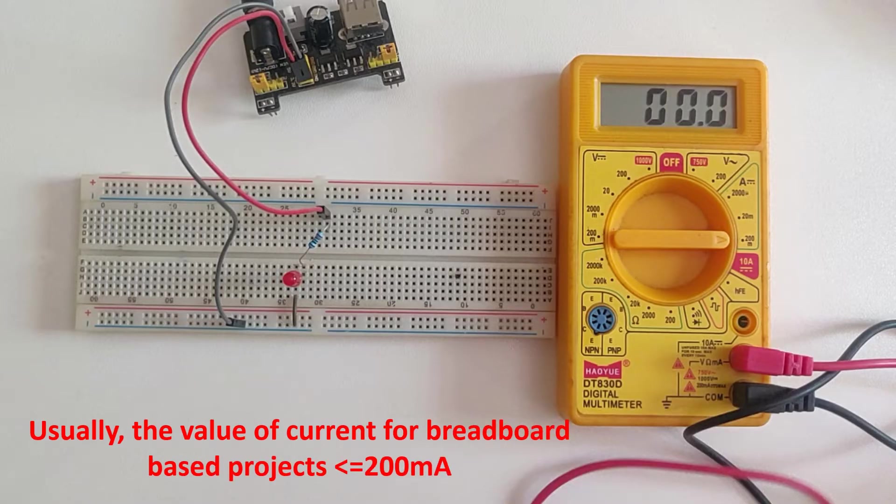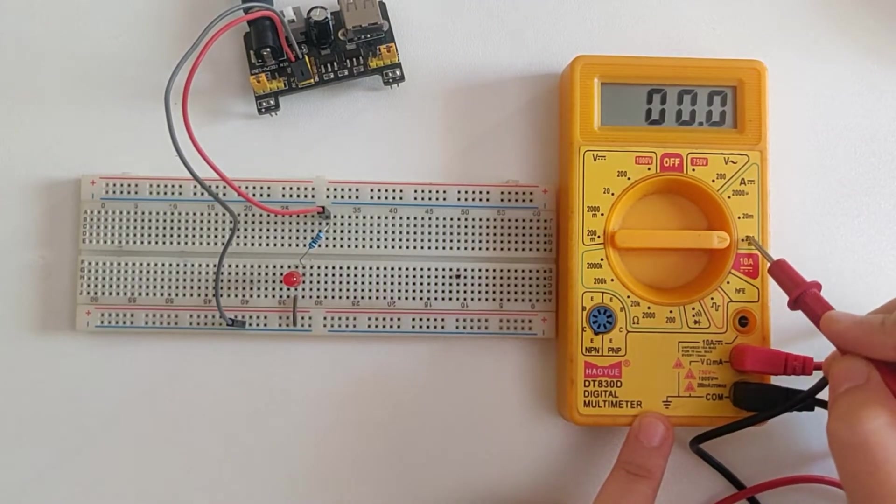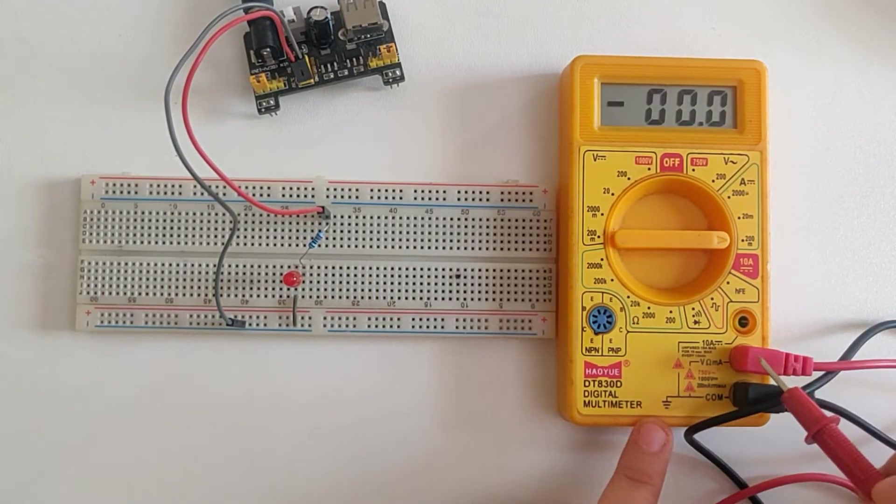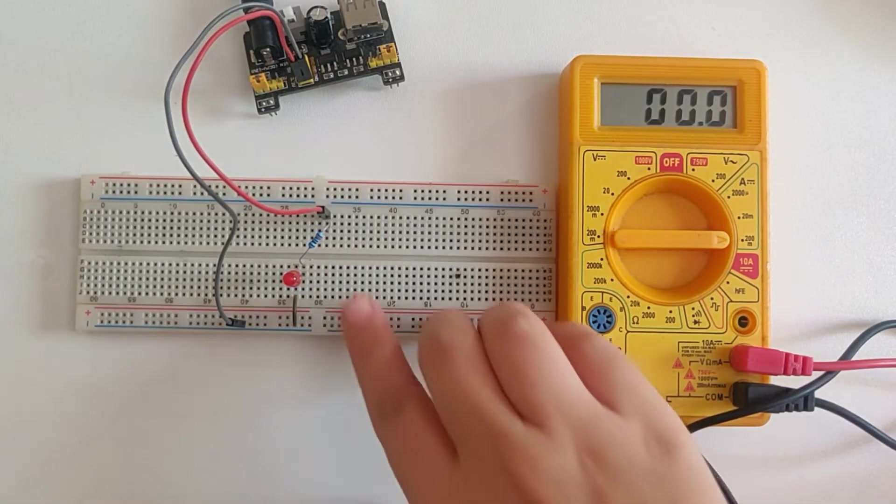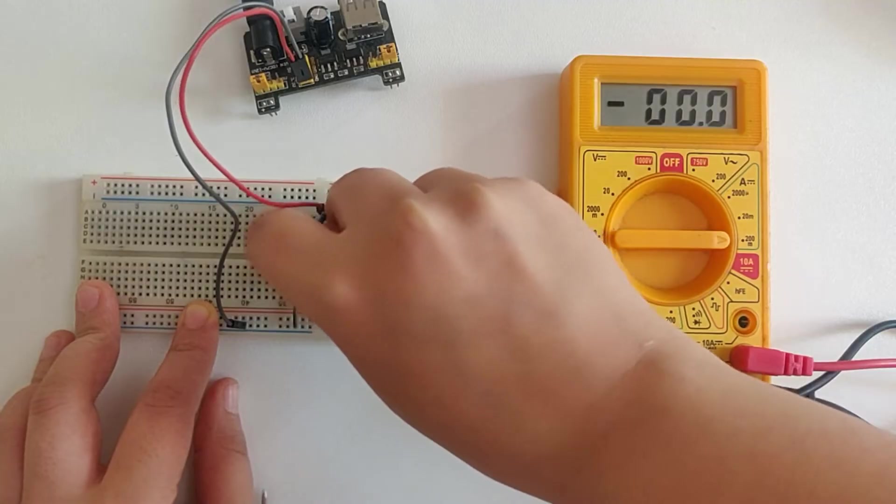Now let's have a quick look at the demonstration. For that, we have to connect the multimeter in series with the circuit. So first of all, I'll select the appropriate range. I'll select the highest available range, that is of 200 milliamperes, and I'll lower it down if required for a more accurate reading.